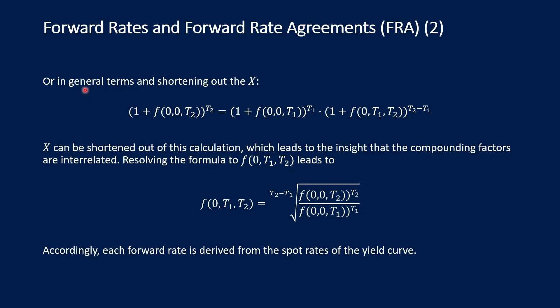If we put this into general terms, we can cancel out the principal X, leaving only the compounding factors. We replace all spot rates by a forward rate term agreed upon at zero and starting at zero — so this is a spot rate written as a forward rate. Putting this into general terms gives the same equation generalized for any points in time. If we now rearrange this formula and isolate the forward rate, we can easily calculate the forward rate from the given spot rates — from the given yield curve.